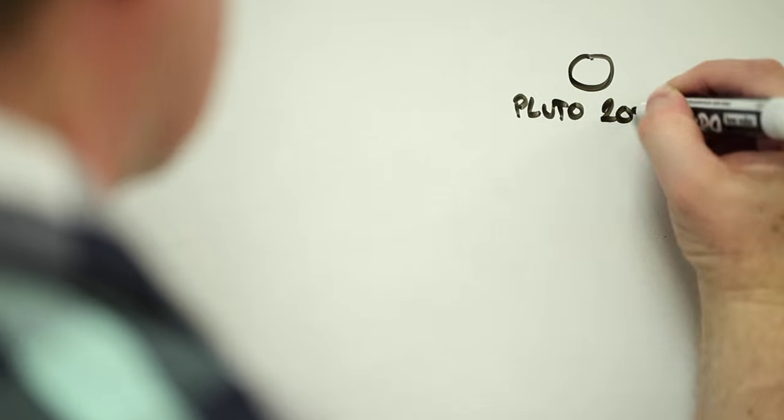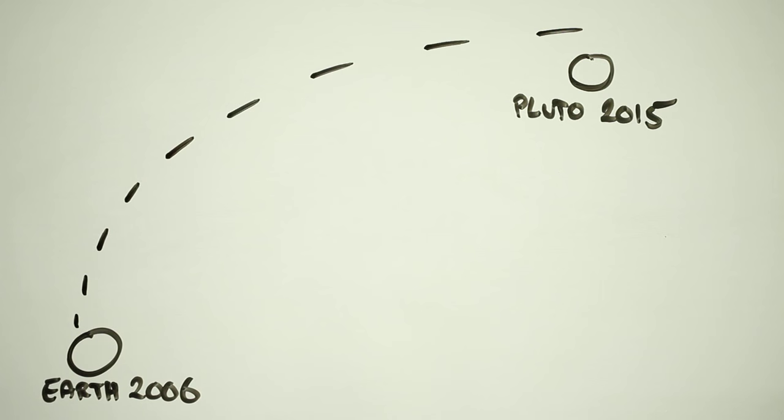When NASA sent the New Horizons spacecraft on its journey on January 19, 2006, it was a risk. There was a probability of mission failure, a probability that was calculated and minimized as far as it could be.